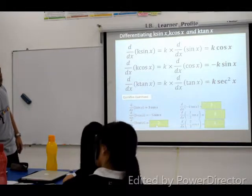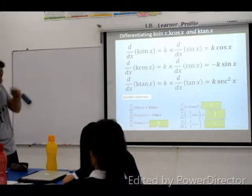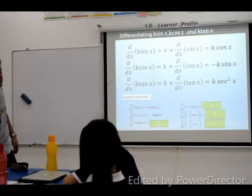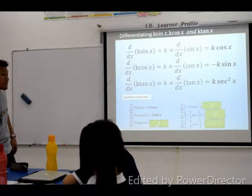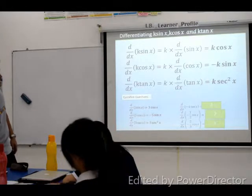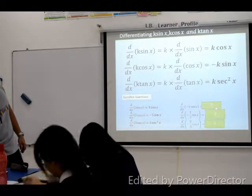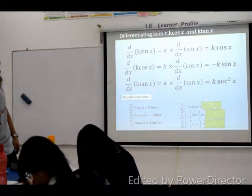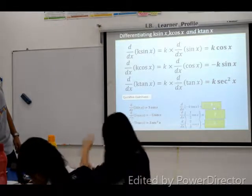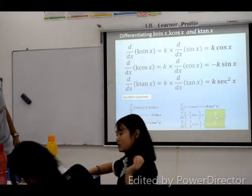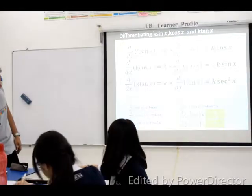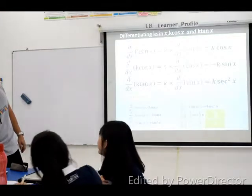You're going to find the next one, right? Sebastian? Negative half cosine x. Negative half cosine x, right? And lastly...